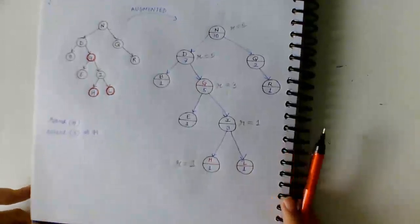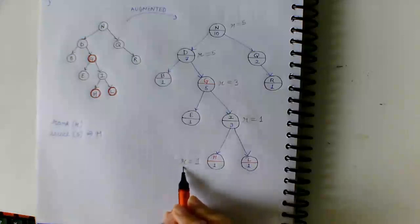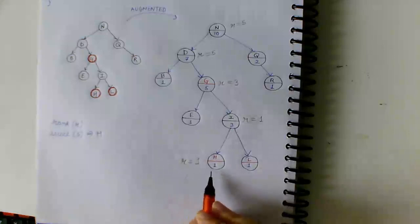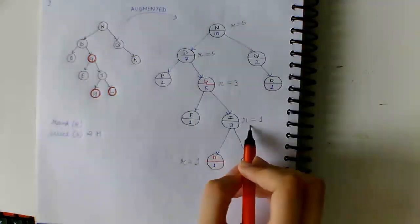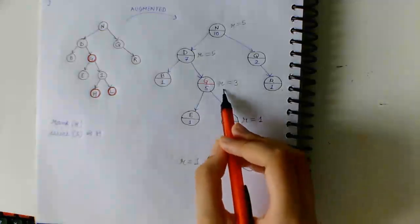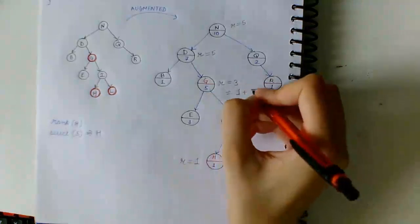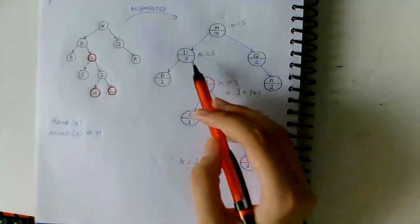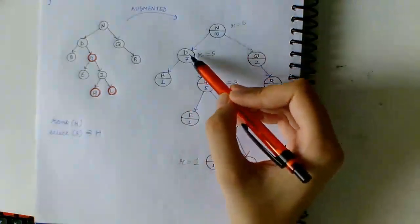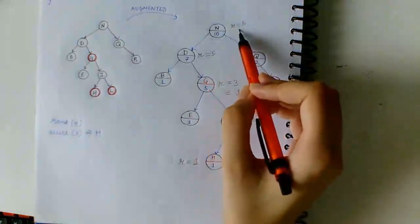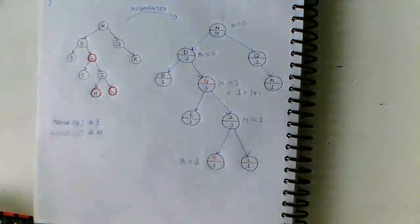Moving on to our question — we need to find the rank of h. Since h has no left subtree, its initial r = 0 + 1 = 1. h is not a right child of its parent i, so r remains 1 at i. Then i is the right child of g, so r becomes 1 + 1 + 1 = 3. Similarly, g is the right child of d, so r becomes 3 + 1 + 1 = 5. Since d is the left child of n, the rank does not change. Therefore, the rank of node h is 5.